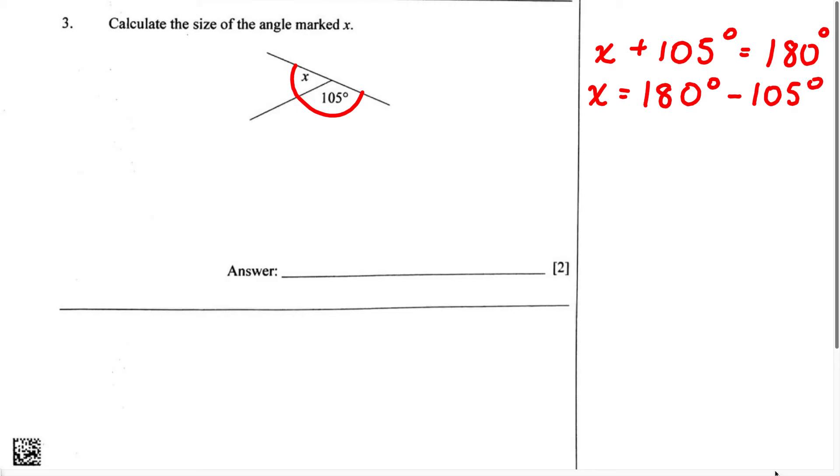Now we can set this problem up to look like this. We can say 180 degrees minus 105 degrees. 0 minus 5 we know can't go, so we're going to have to borrow. Therefore 8 is now going to become 7 and 0 is going to become 10. 10 minus 5 is going to give us 5, 7 minus 0 is going to give us 7.